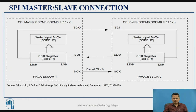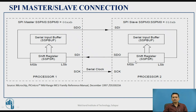Now we will try to understand how to have interconnection between two devices. If you have processor one and processor two, first you have to decide which is going to be the master. Let's say processor one is the master — it will generate the SCK clock, and that clock is given to the slave. Since SPI supports full duplex communication, the serial data output line of the master is connected as SDI for processor two, and SDO of processor two is connected to SDI of the master. Internally, they use the SSP shift register and buffer register for serial communication.